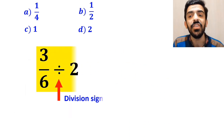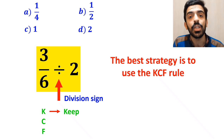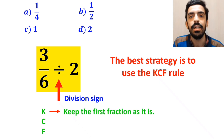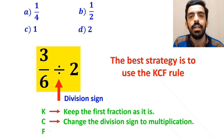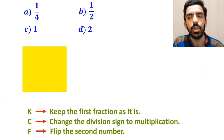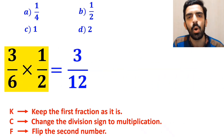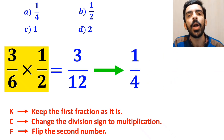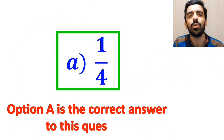Whenever we see a division sign between two terms, the best strategy is to use the KCF rule. K stands for keep the first fraction as it is. C stands for change the division sign to multiplication. And F stands for flip the second number. So instead of the highlighted part, we write 3 over 6 multiplied by 1 over 2, which ultimately gives 3 over 12, and it simplifies to 1 over 4. Therefore, option A is the correct answer to this question.